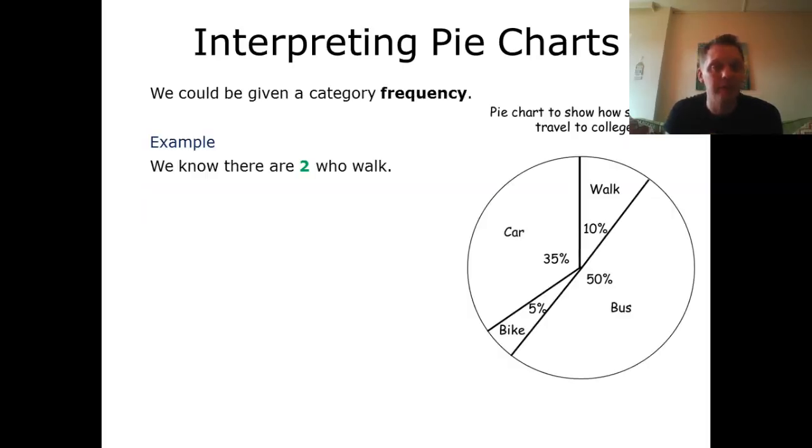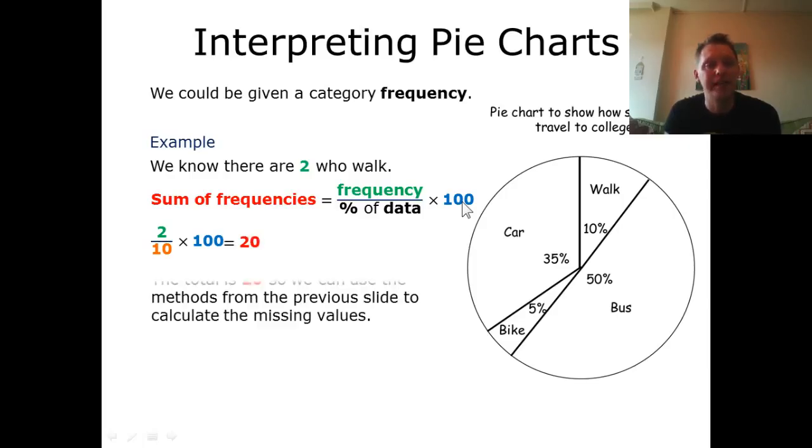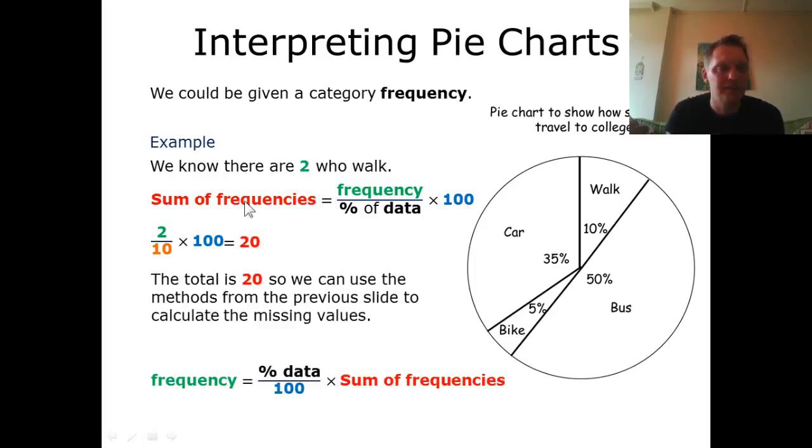And of course exactly the same if we've been given the frequency of just one of the categories. I'm going to take two, divide that by our percentage for that category, times it by 100, and that will give me 20. So 20 people in total were asked. I can use that to then calculate the frequencies for the other categories.